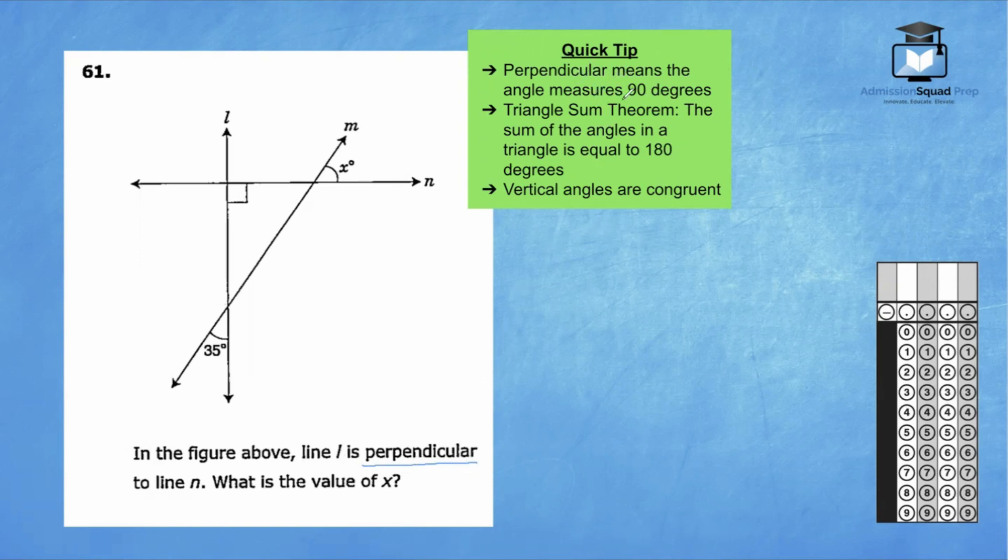Perpendicular means the angle measures 90 degrees. So we know that this number right here is going to be 90 for that angle. We also know the triangle sum theorem. The sum of the angles in a triangle is always equal to 180 degrees. The final piece of information you need to know for this problem is that vertical angles are congruent.